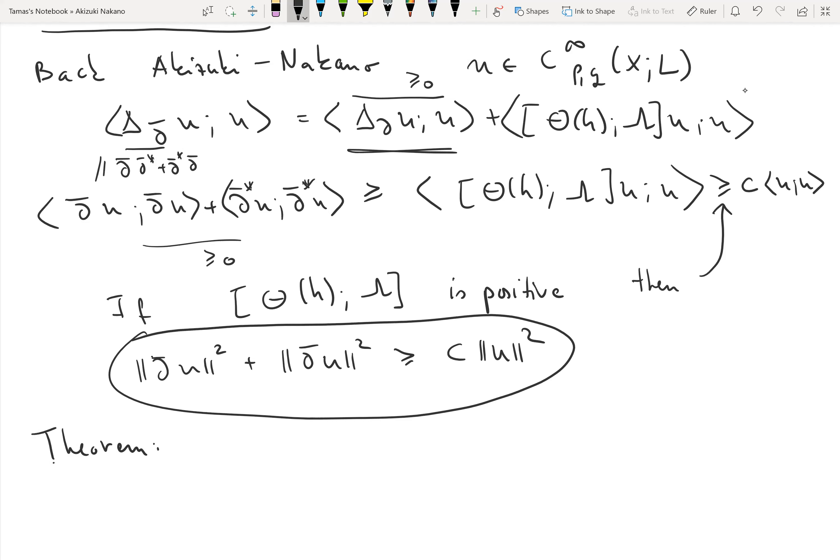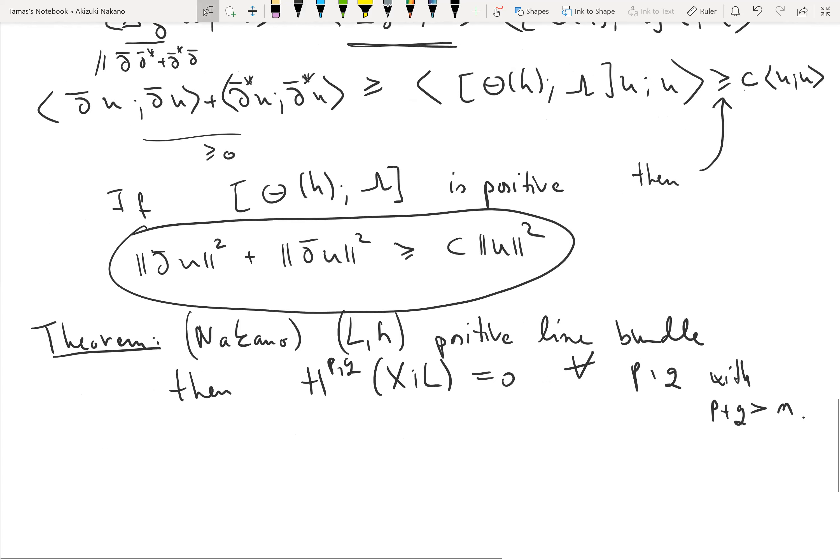This will imply the Nakano vanishing theorem. The Nakano vanishing theorem says the following: if (L,h) is a positive line bundle, then all the H^{p,q} cohomology groups of L are zero for all p,q where p+q is greater than n.